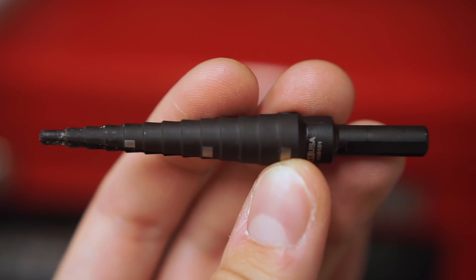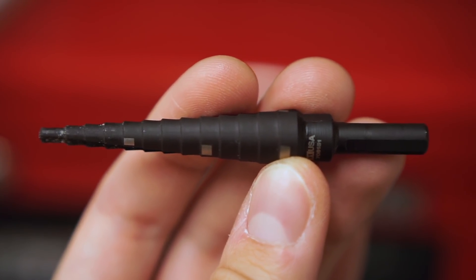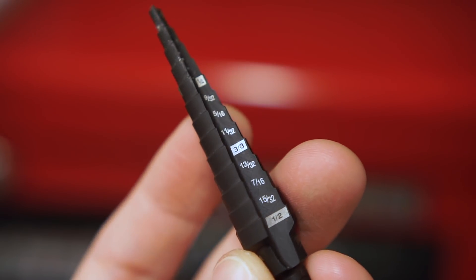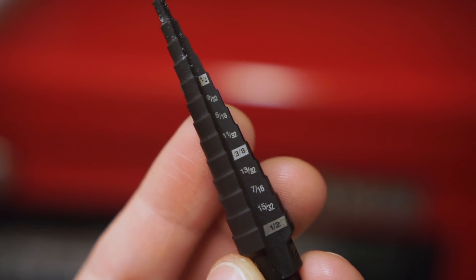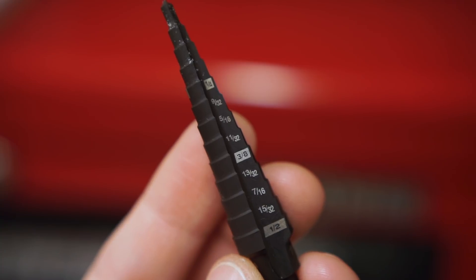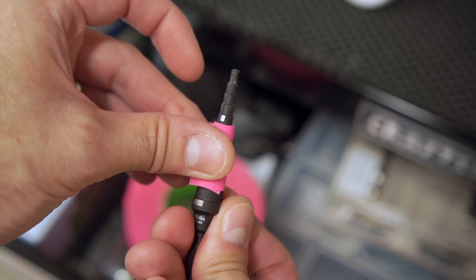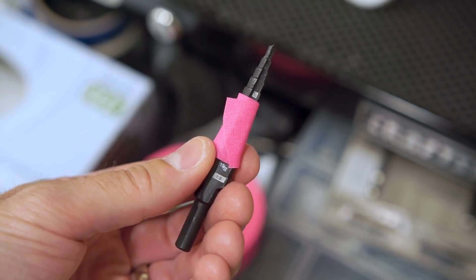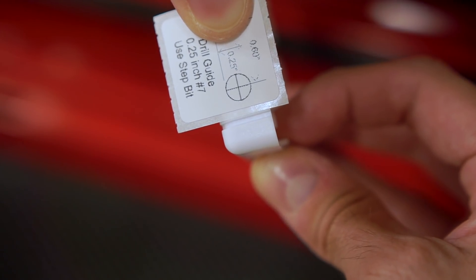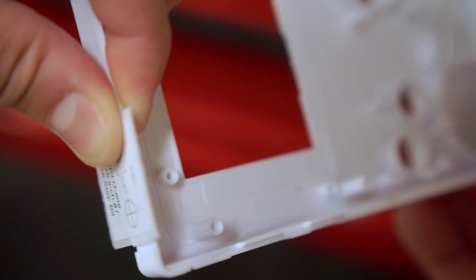Two holes need to be drilled for the module's controls, and I decided to use a step bit. It drills holes incrementally, and works really well with materials like plastic. I used a piece of tape to flag the quarter-inch mark on the bit, so I'd stop at the right size. The kit includes a sticker to use as a guide, and it's important to position it correctly.